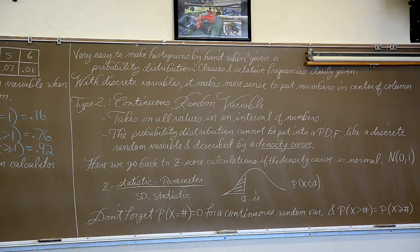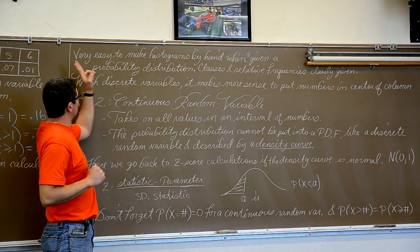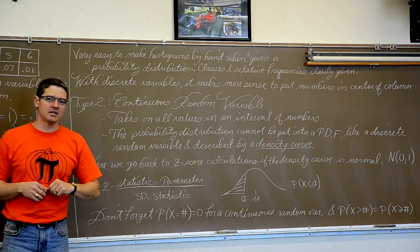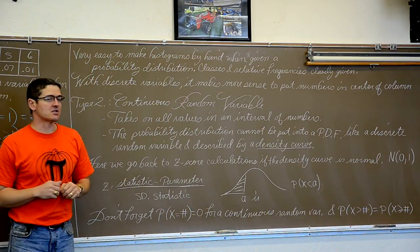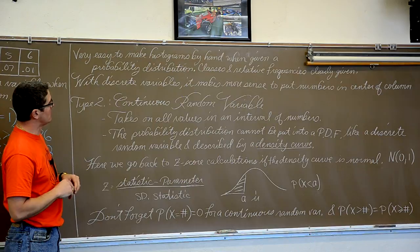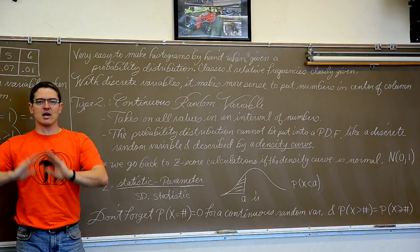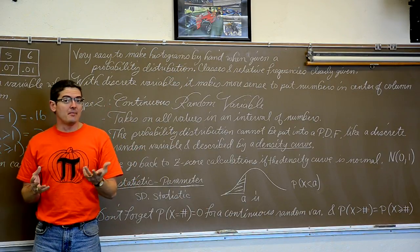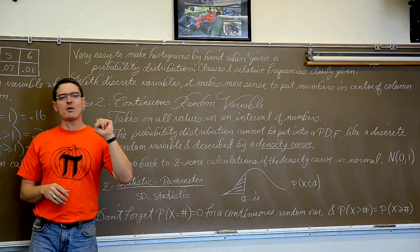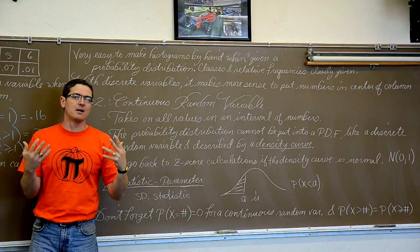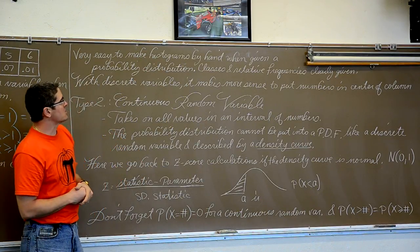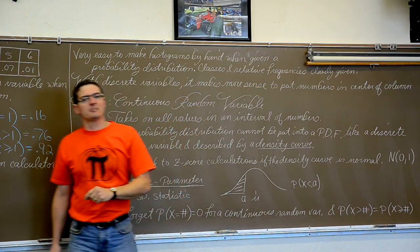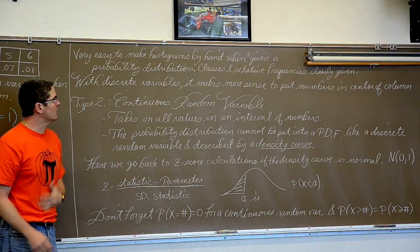BAM! Last page. Very easy to make histograms by hand when given a probability distribution, just like we just saw with the numbers of TVs in a single household. Because they are telling you like, here is your x value, zero, one, two, three, very precise. And, hey, by the way, the probability of a zero and the probability of a one and the probability of a two is blah, blah, blah. So when you are given such nice clear information, if you are asked to make a histogram, please just make it by hand. Don't bother having a calculator do it for you.